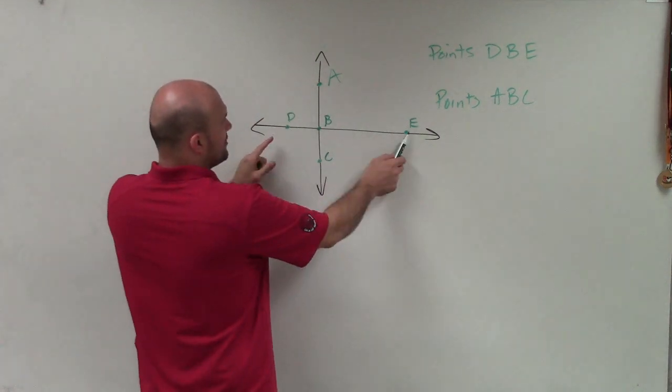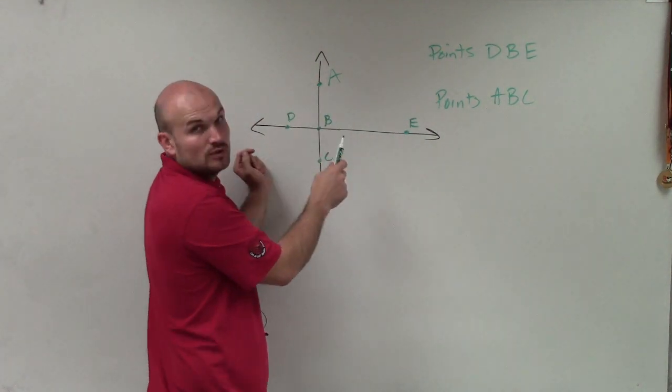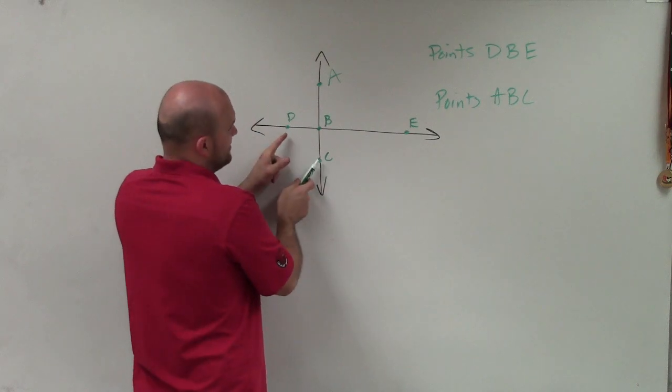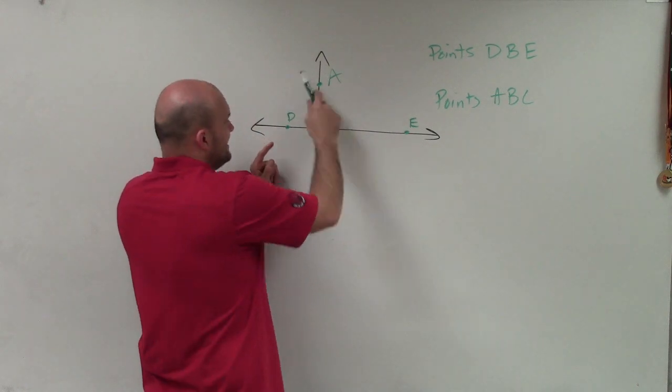However, we cannot say E and A are collinear. Those would be non-collinear because they do not lie on the same line. Same thing like C and D, C and E, or A and D.